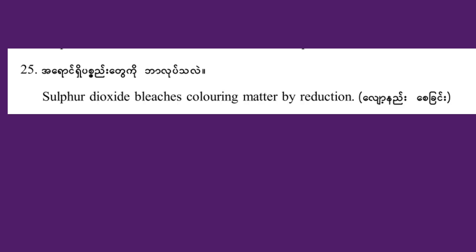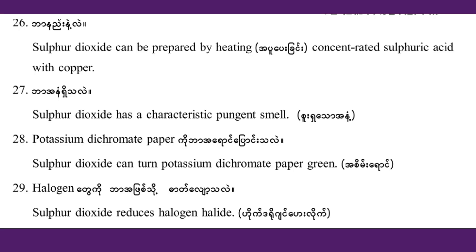Sulfur dioxide bleaches colored matter by reduction. That is why sulfuric acid can be used. Sulfur dioxide can also be prepared by heating concentrated sulfuric acid with copper. Sulfur dioxide has a characteristic pungent smell.